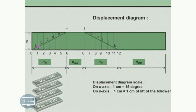Now join this diagonal — it will intersect the vertical lines at points a, b, c, d, e, and f. Then there is a dwell period of 45 degrees, meaning the follower will remain in the same position for 45 degrees of cam rotation, and then the follower will start coming down for the return stroke. Join the return diagonal; it intersects the vertical lines at g, h, i, j, and k. These distances — 1a, 2b, 3c, 4d, 5e, 6f for the out stroke and 7g, 8h, 9i, 10j, 11k for the return — are important for drawing the cam profile.